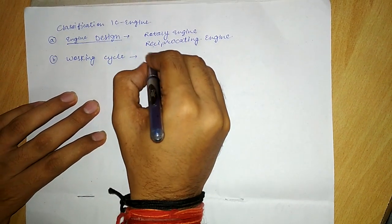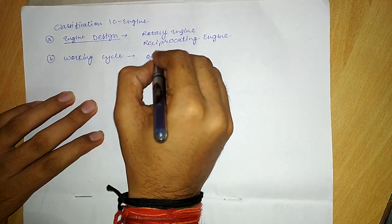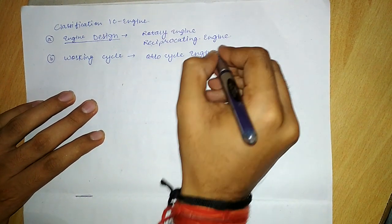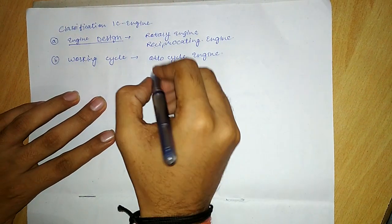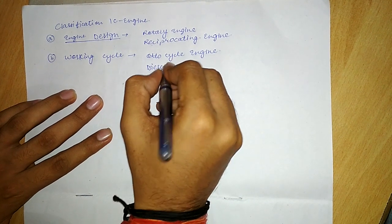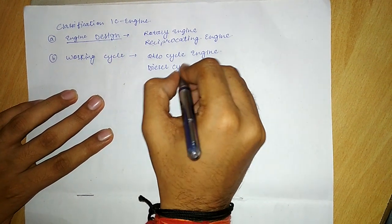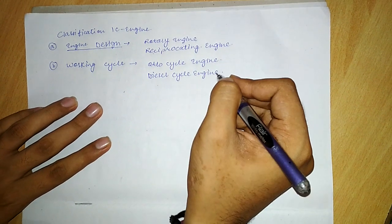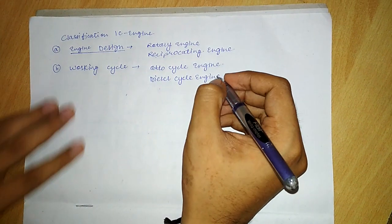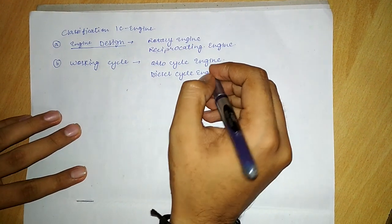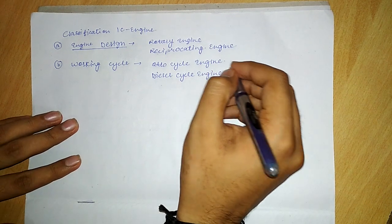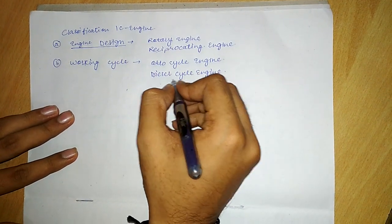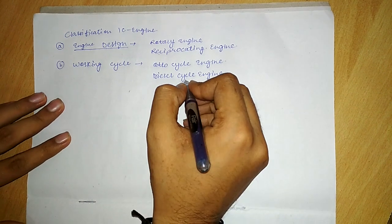The second classification is on the basis of working cycle. IC engines are classified on the basis of the cycle on which they work — the first one is the Otto cycle and the second one is the diesel cycle.